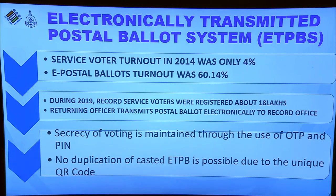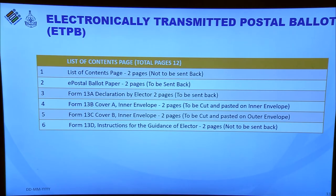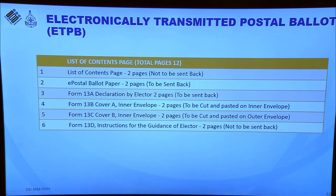In the ETPBS system, the returning officer transmits the postal ballot electronically to the record office. The record office downloads the e-postal ballots, takes a printout, and gives them to the respective service voter. The e-postal ballot consists of 12 pages: the first two pages are the list of contents, the next two are the ballot paper, followed by form 13A (declaration), form 13B (cover A, inner envelope), form 13C (outer envelope cover), and form 13D (instructions for the service voter).